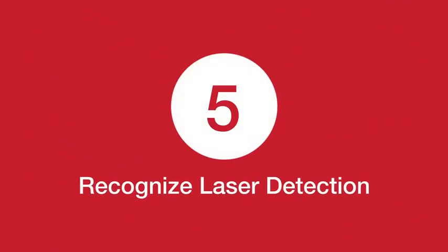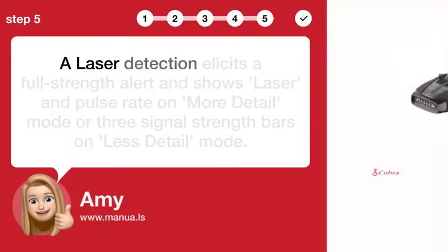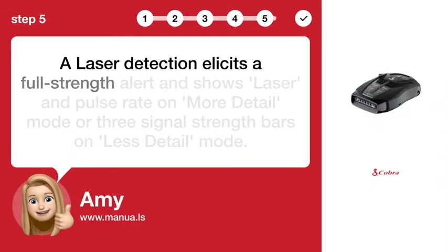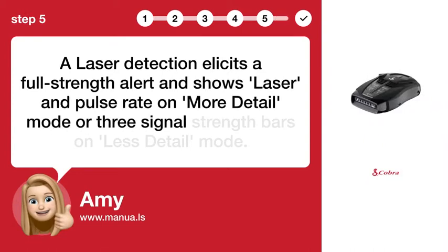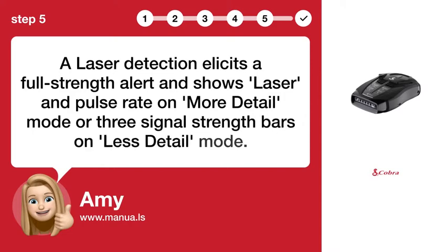Step 5: Recognize laser detection. A laser detection elicits a full-strength alert and shows laser and pulse rate on more detail mode, or 3 signal strength bars on less detail mode.